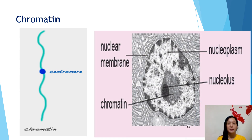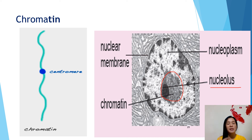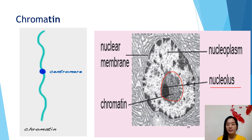This is chromatin. Inside the nucleus, the dense part is the nucleolus and the chromatin. When the cell does not undergo cell division, the chromosome is in the form of a thread-like structure, so we call it chromatin.